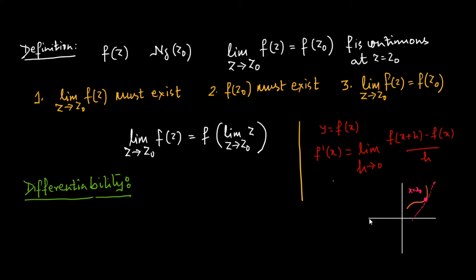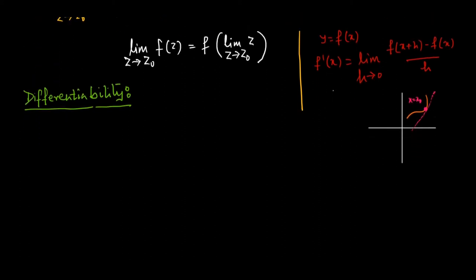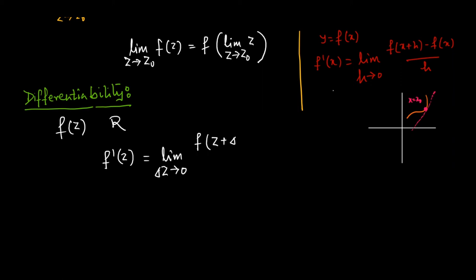Now let us see what we mean by differentiability of a function of a complex variable. Let f(z) be a single-valued function in some region R of the z-plane. The derivative of f(z) is defined as f′(z) = limit as Δz tends to 0 of [f(z + Δz) − f(z)] / Δz, provided this limit exists independent of the manner in which Δz tends to 0.